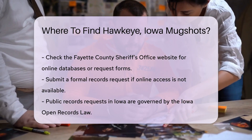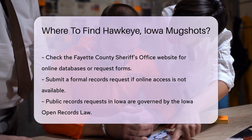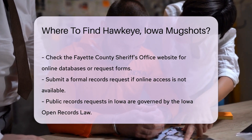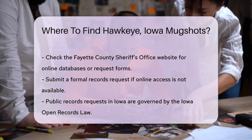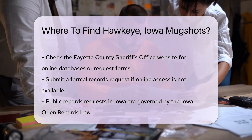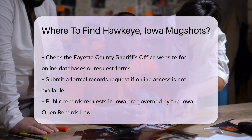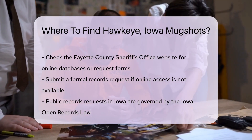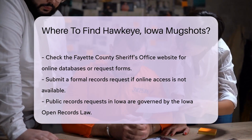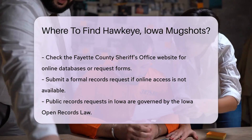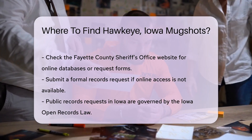If they do not offer online access, you can submit a formal records request. Public records requests in Iowa are governed by the Iowa Open Records Law. You may need to submit a written request. Include specific details like names, dates, and the type of record you need. Be clear and concise to avoid delays.